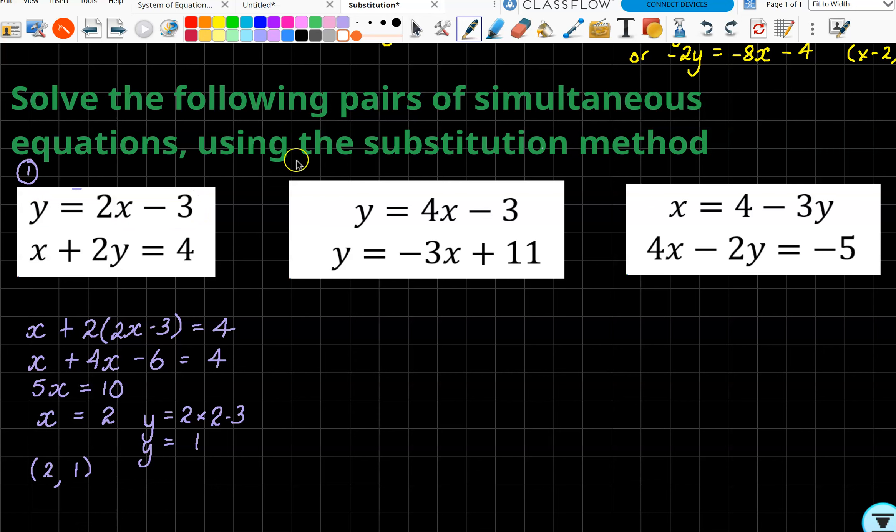Onwards to number 2. Still substitution, we're still going to replace. So this time they're looking a little bit different—we've got a y equals this and a y equals this. You can either look at it as, well, if y equals both of those, well then they have to equal each other, or like we did before, we're doing the substitution, so we're substituting this y in place of that y.